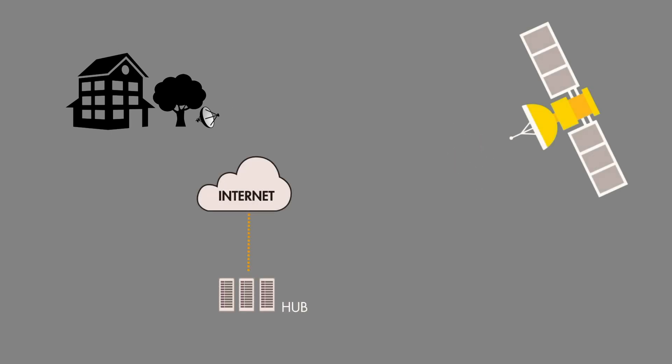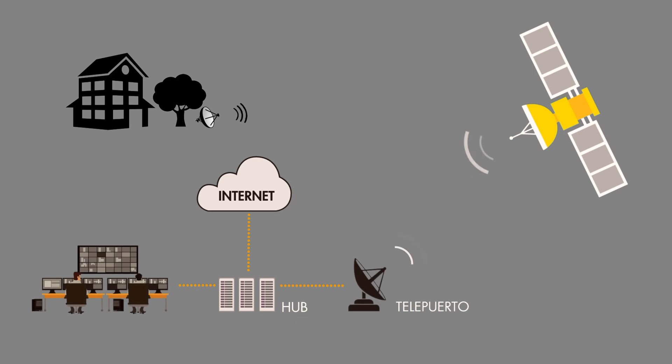The correct installation of a V-SAT antenna is a fundamental process in order for the user to receive satellite content properly, thereby avoiding interferences that could be disruptive both for the operator and the user.